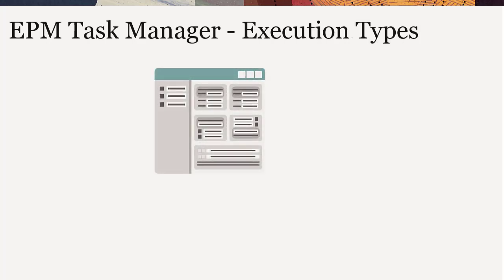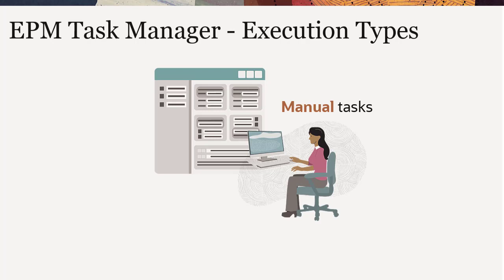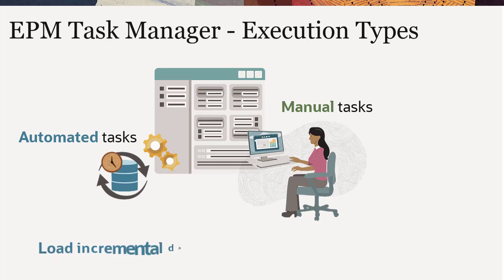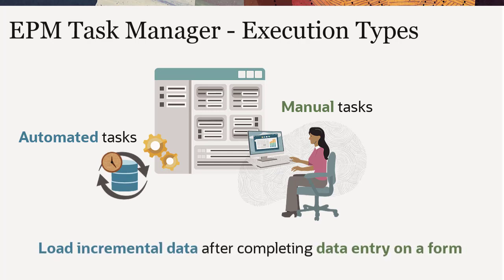Tasks are classified into two execution types. Manual tasks require users to complete the task and verify that it was completed. Automated tasks require no user interaction and are based on their schedule. You can create a schedule that includes a combination of manual end user tasks and automated tasks to help streamline your planning process. For example, you can kick off a job that loads incremental data after completing a task that involves data entry on a form.